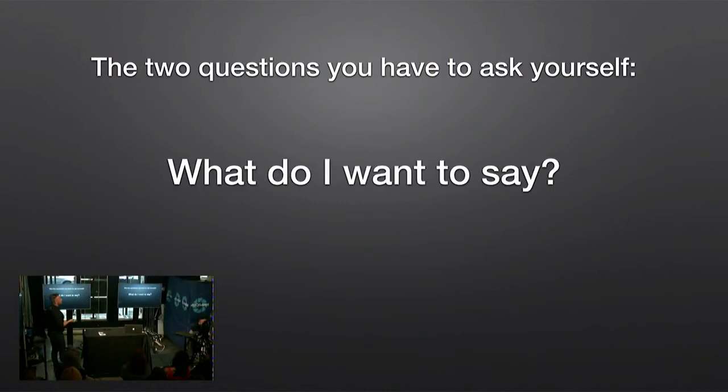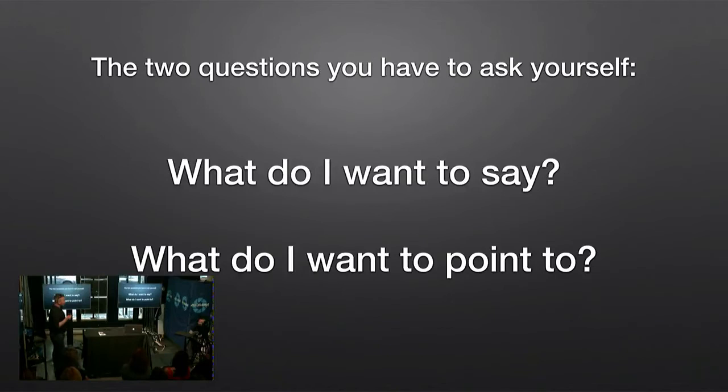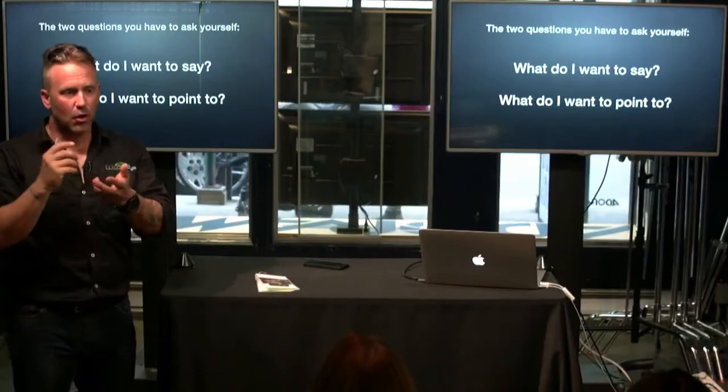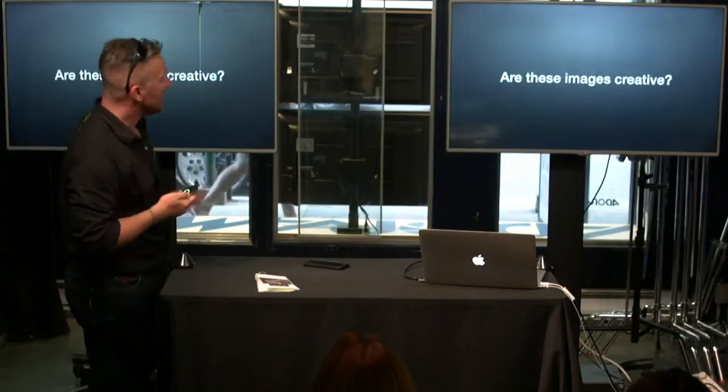Author Anne Lamott said that for art to be art it has to point at something. So what do I want to point at? It could be as simple as a sunrise, or it could be what a blurry polar bear looks like because I panned him. Figure out what you want to show and the rest becomes a little bit easier.